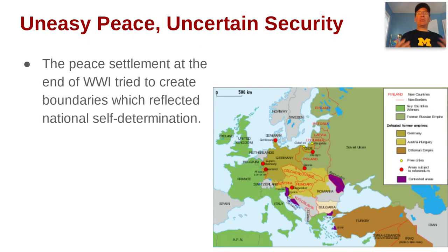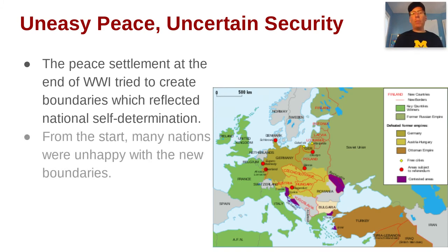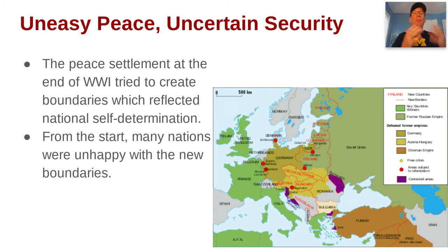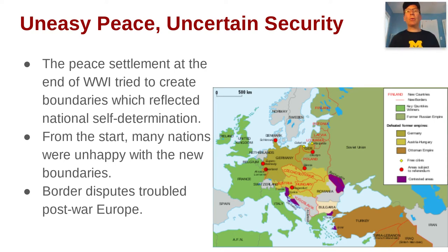We're going to get started with a discussion of the peace settlement, because the peace settlement itself is going to cause some of the instability in Europe. This happens because they really try to create boundaries that reflect national self-determination, so they create a whole bunch of new nations. But from the start, a lot of these new and old nations are unhappy with these boundaries — they don't feel like they perfectly reflect national lines or provide for their security needs. In this map, the purple areas show the greatest conflict, including Southeast Europe with its big ethnic mix from the old Austro-Hungarian Empire.